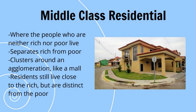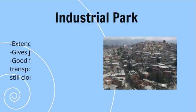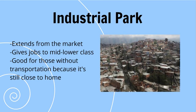The middle class residential zone is where people who are neither rich nor poor live. It separates the rich from the poor, clusters around an agglomeration like a mall, and residents still live close to the rich but are distinct from the poor. The industrial park extends from the market and gives jobs to the mid-lower class — it is good for those without transportation because it is still close to home.